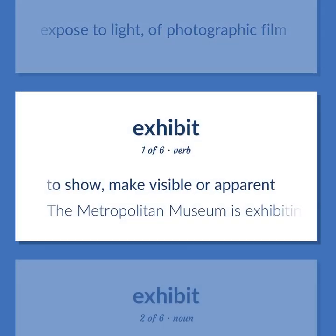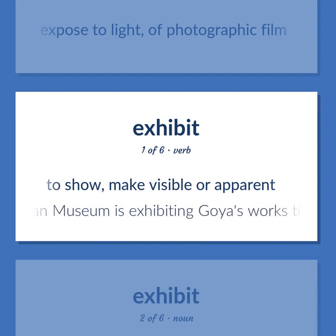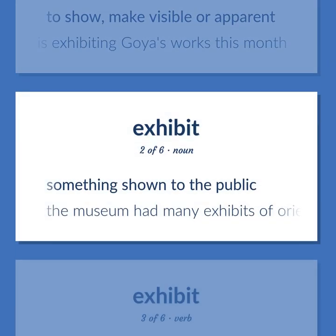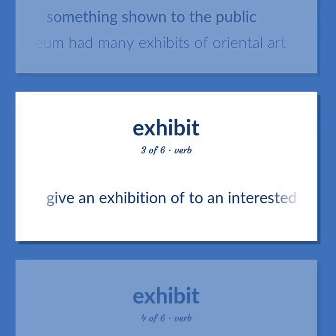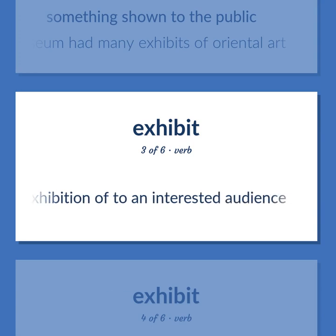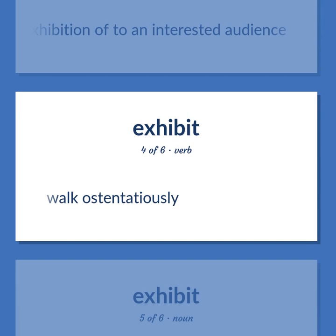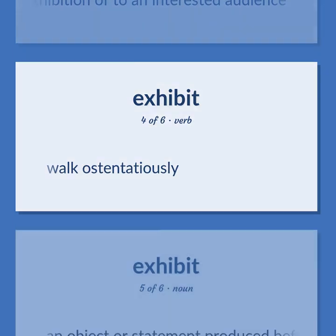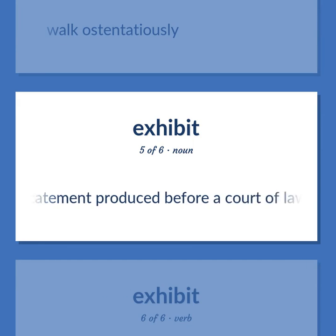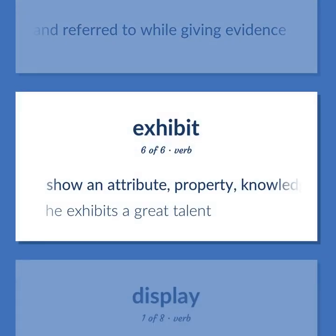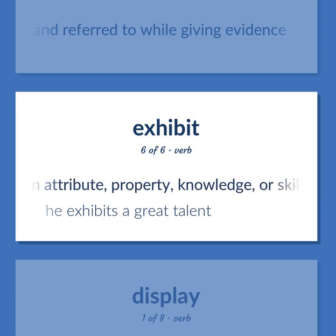Exhibit: To show, make visible or apparent — the Metropolitan Museum is exhibiting Goya's works this month. Something shown to the public — the museum had many exhibits of Oriental art. Give an exhibition of to an interested audience. Walk ostentatiously. An object or statement produced before a court of law and referred to while giving evidence. Show an attribute, property, knowledge, or skill — he exhibits a great talent.